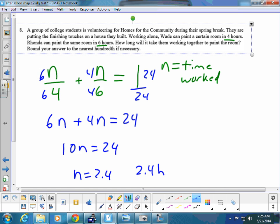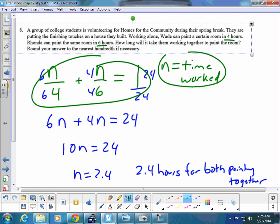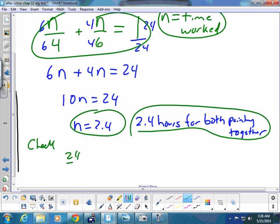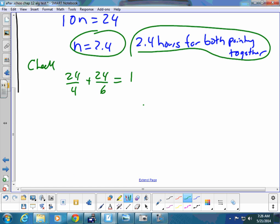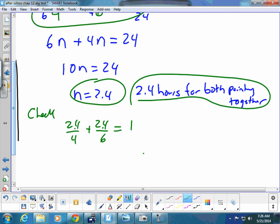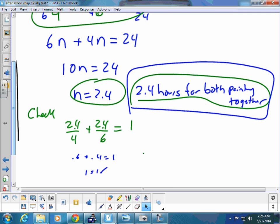So it would be 2.4 hours for both painting together. So this is a Finney 5 question. We've defined, we've set up, we've solved, and we've written our answer. We should do a check on this. So let's do a quick check here. To give full credit, let's do the check. Is 2.4 over 4 plus 2.4 over 6 equal to 1? So this would be 0.6 plus 0.4 equal to 1, and yes it is. That's 1 equals 1, and it checks. But your answer is over here, written out. And I have it labeled also.